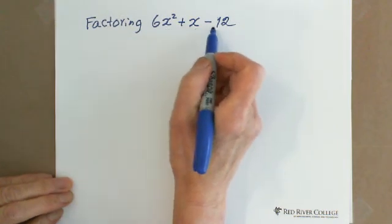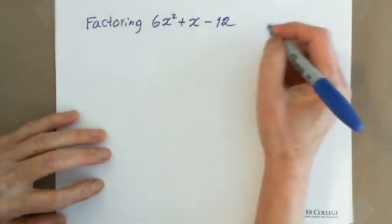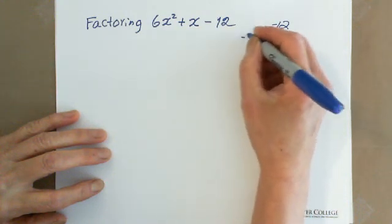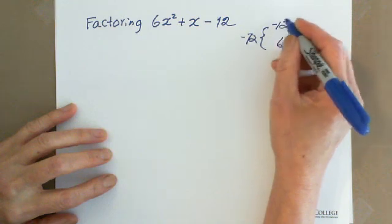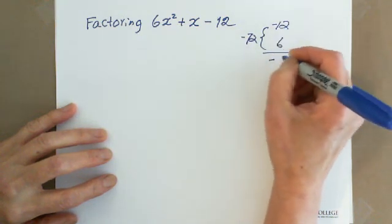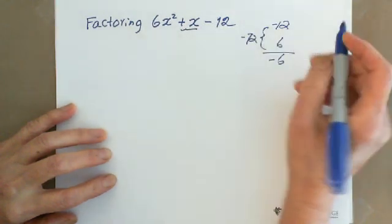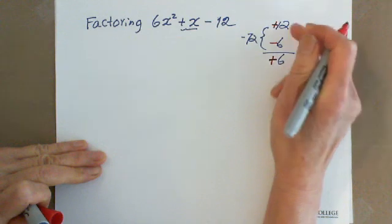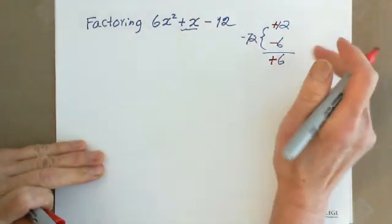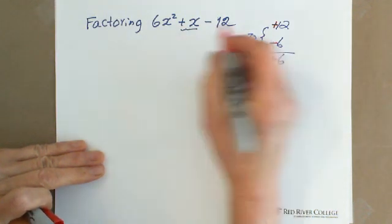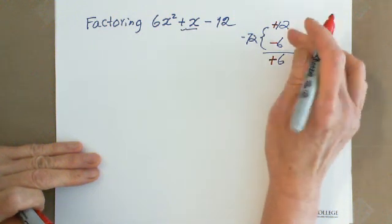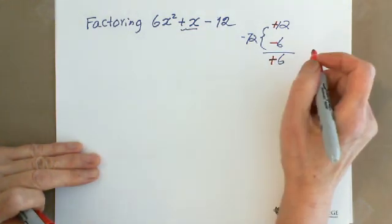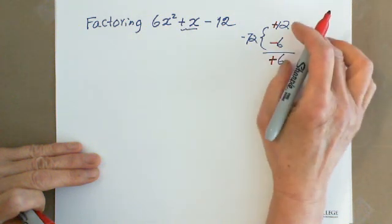For 6x squared plus x minus 12, we multiply the first coefficient and last constant: negative 12 times 6 gives negative 72. Using the reference numbers — adding them gives negative 6. Because we need a positive number, we switch which one is positive and which is negative, giving positive 6. But we need positive 1, which means we need two numbers that are very close together.